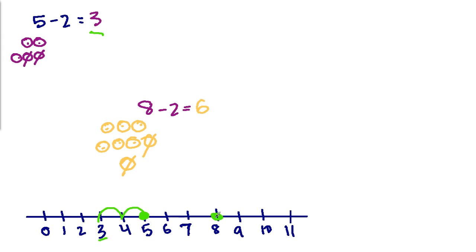You do the same thing with 8. So you have 8, and you jump 2 backwards, right, because you're subtracting 2 and you're subtracting because you're taking it away. So the answer has to be smaller so you're going backwards. And you go 1, 2, and you land on 6. So 8 minus 2 equals 6.